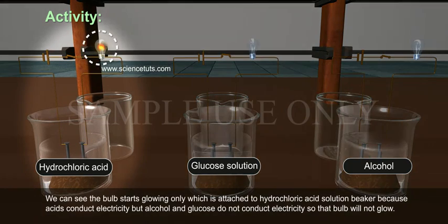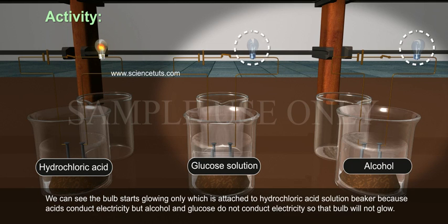We can see the bulb starts glowing only when attached to the hydrochloric acid solution beaker, because acids conduct electricity, but alcohol and glucose do not conduct electricity, so that bulb will not glow.